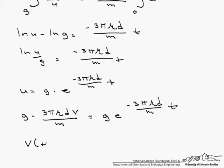We end up with v of t equals mg over 3 pi mu d times 1 minus e to the minus 3 pi mu d over m times t.